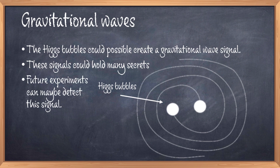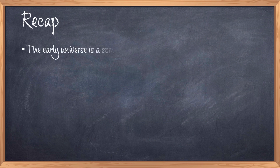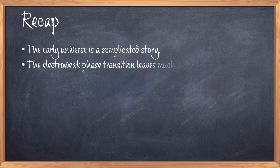As it looks now, the constraints from the direct detection would likely put the theory to the test before we can look at these gravitational wave signals. The early universe is a complicated story where there is still more to be learned. I hope you have a better idea of the electroweak phase transition and understand that the standard model struggles with baryogenesis, but with new extensions of the model the situation can be improved. Gravitational wave signals might be able to tell us more secrets about the universe in the future, so there is more work to do and many things to learn.